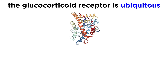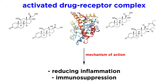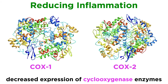Considering the ubiquitous expression of the glucocorticoid receptor in most cell types with different protein expression repertoires, alongside the fact that glucocorticoids can influence the expression of ten to twenty percent of the human genome, it can be appreciated how vast and complicated the pharmacodynamic profile is for drugs of this class. In this tutorial, we will focus on a few mechanisms most substantiated to lead to the desired clinical outcomes. First, let's focus on reducing inflammation. Glucocorticoids decrease the gene expression of cyclooxygenase, or COX, enzymes, which we learned about when we covered NSAIDs.